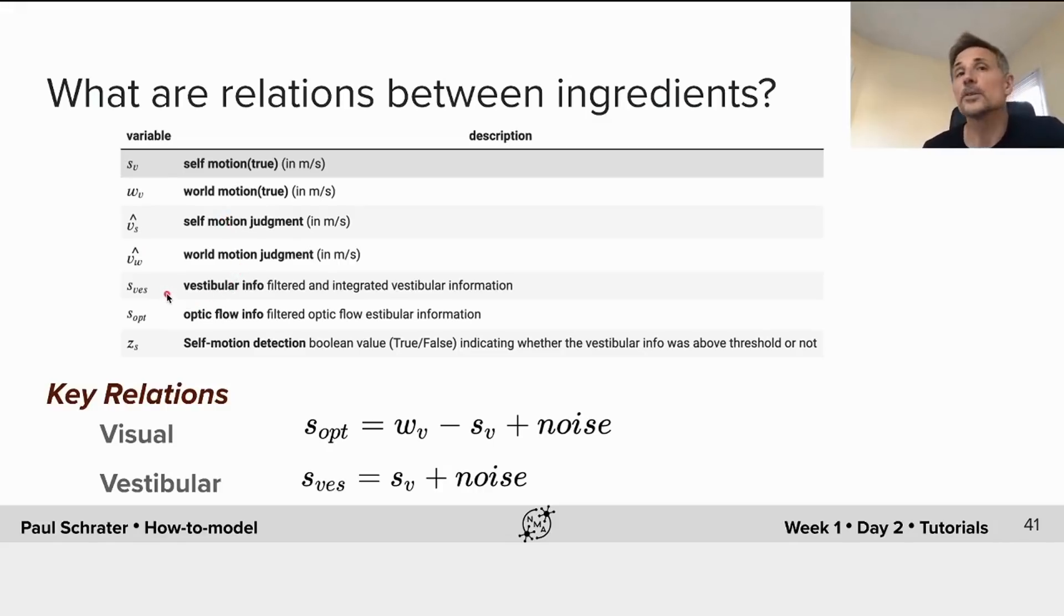The signals that the participants had available are the inputs to the model. These are the vestibular info, which we can assume is already filtered and integrated according to our understanding of what the brain would be doing. And finally, we have a detection. And I'm going to give it its own variable, which is in general good practice. So self-motion detection will be called the variable Z. It will just be a Boolean variable indicating whether or not, given a threshold, the subject should have detected it.